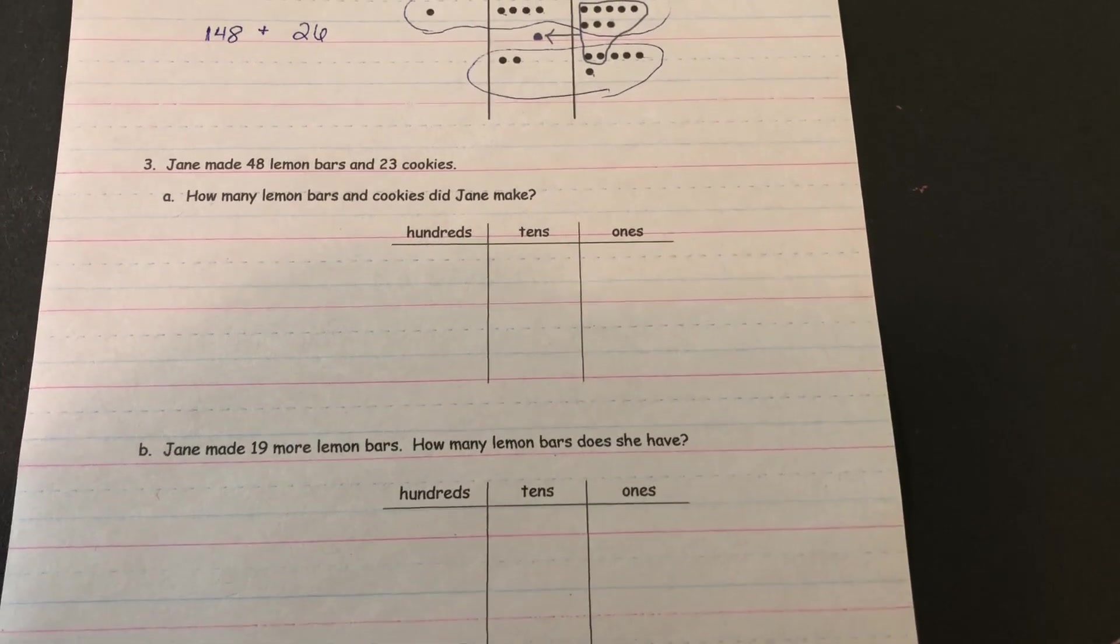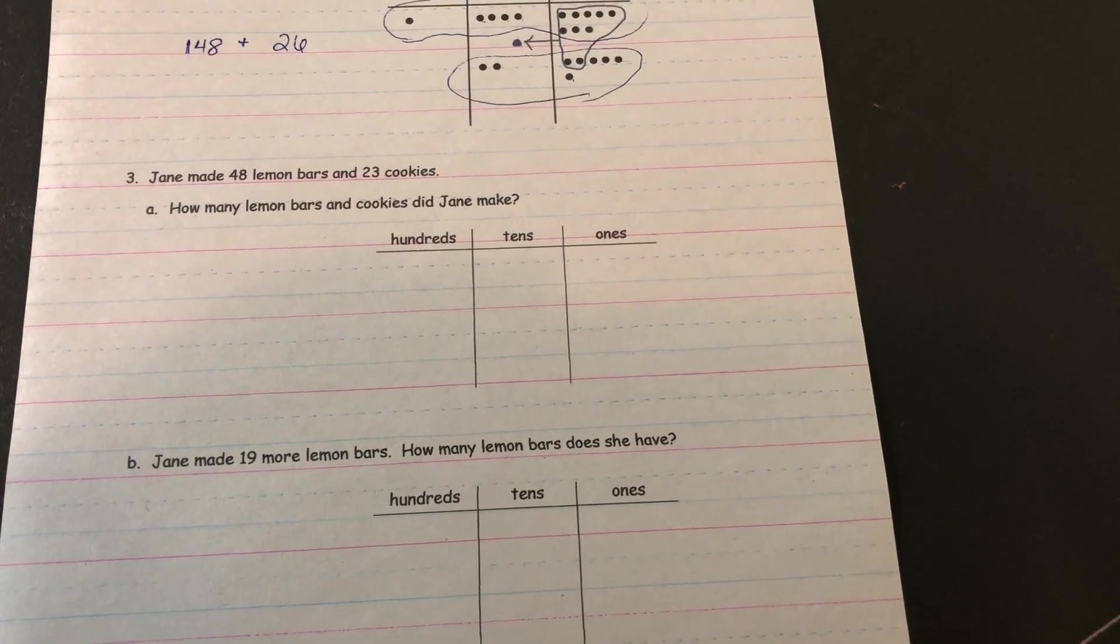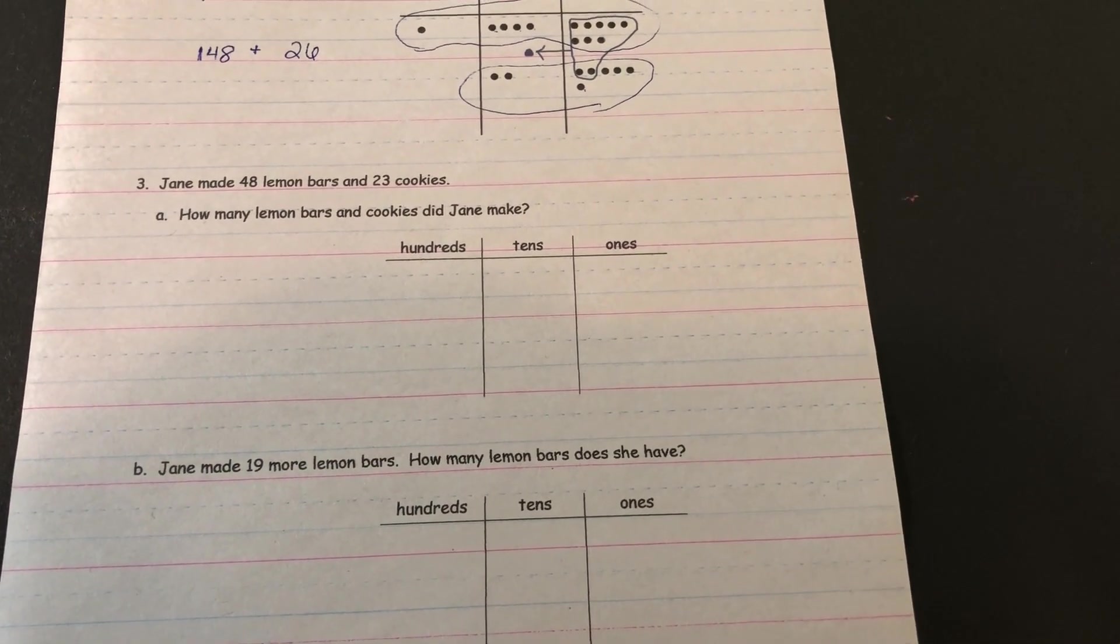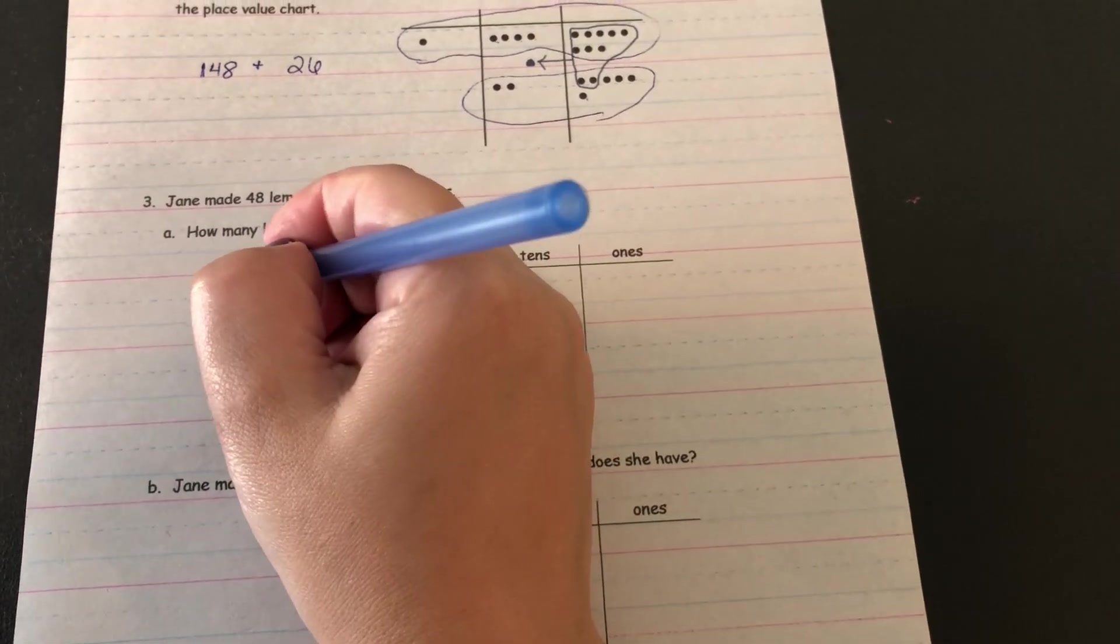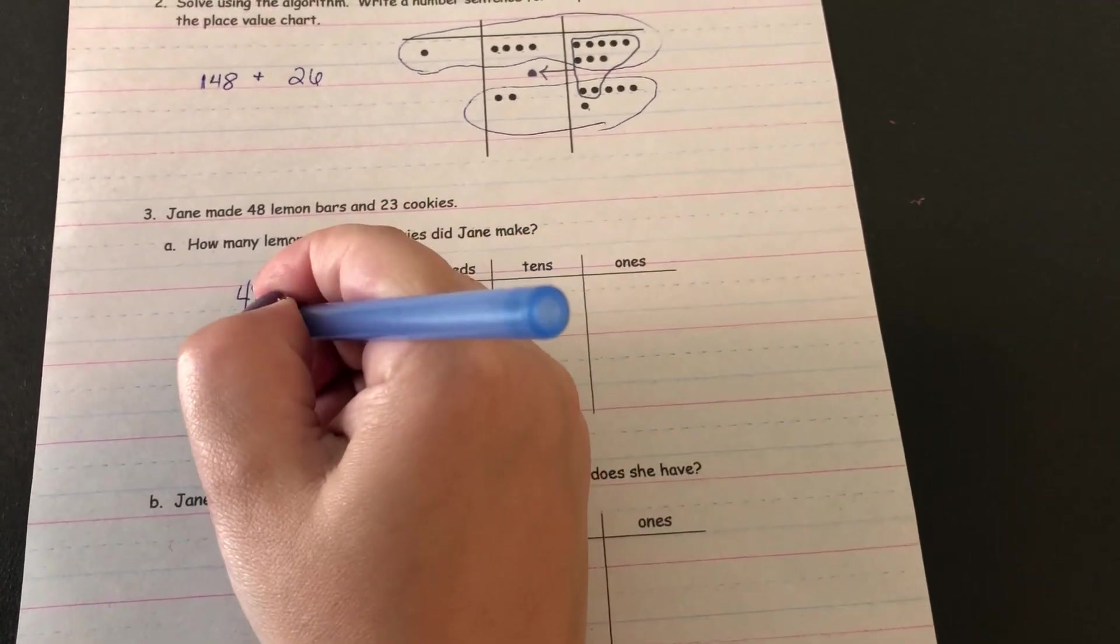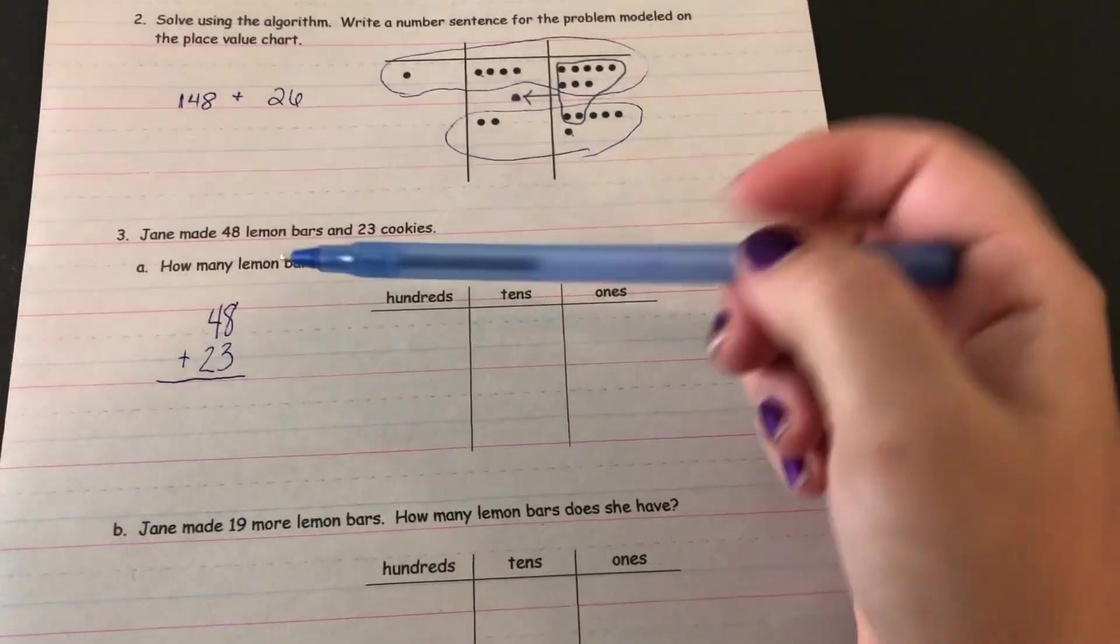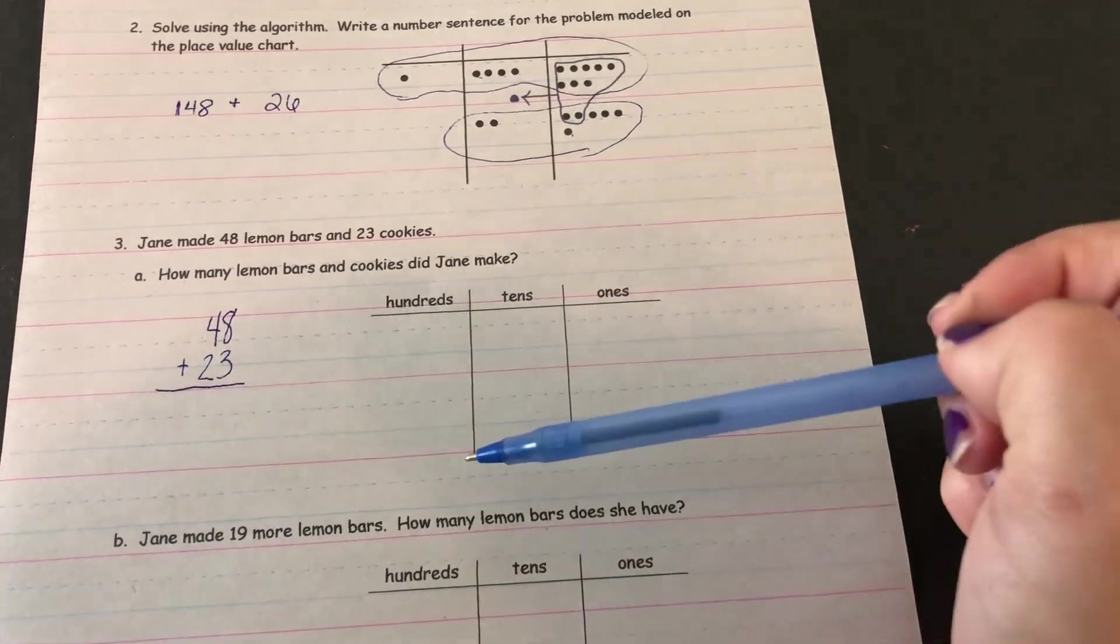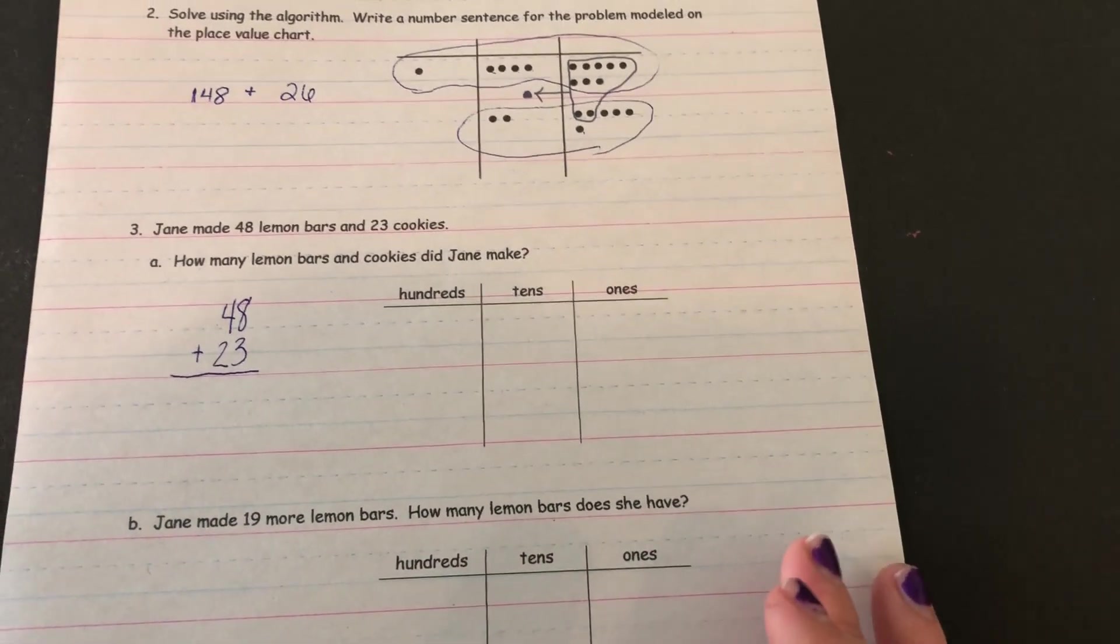For the last section, it says Jane made 48 lemon bars and 23 cookies. How many lemon bars and cookies did Jane make? So you'll need to add 48 plus 23. And I would do it in standard form and then double check yourself with your place value chart to figure out how many she made altogether.